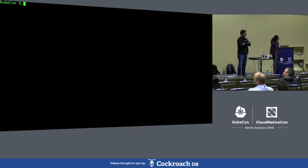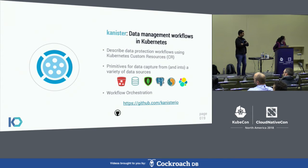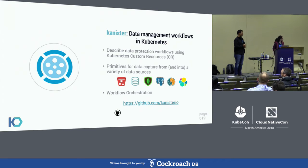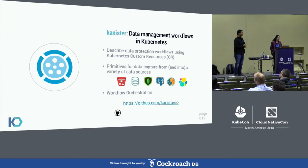To back up and restore this application, we're introducing a tool called Canister — it's an open source project. It helps you plan your data protection workflows using Kubernetes custom resources, giving you a single pane of control. If you know how to use kubectl, you know how to use Canister. Canister has its own primitives for data capture to and from a variety of data sources — block storage, local file system, MySQL, Postgres. Most importantly, Canister helps orchestrate all the workflow steps for you.